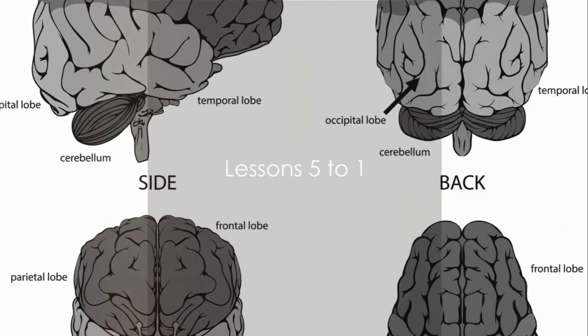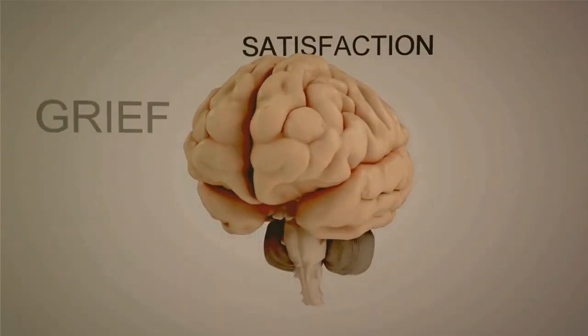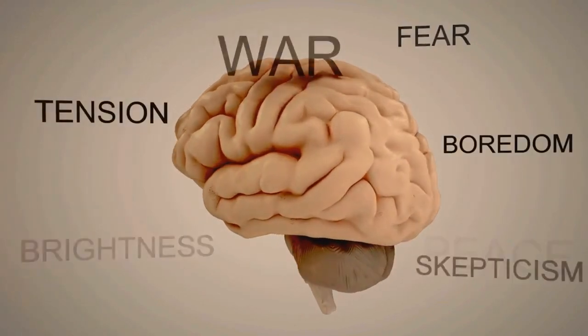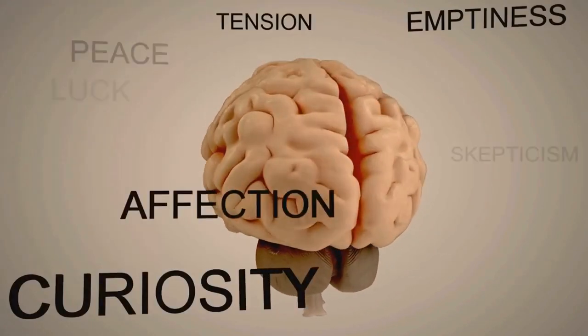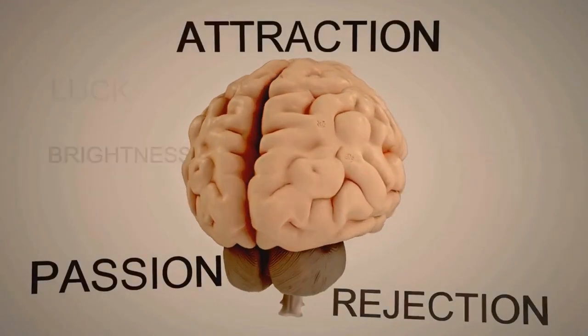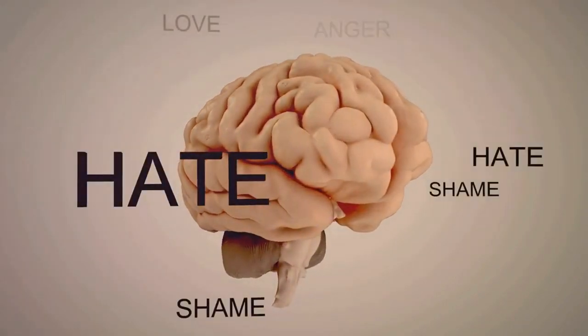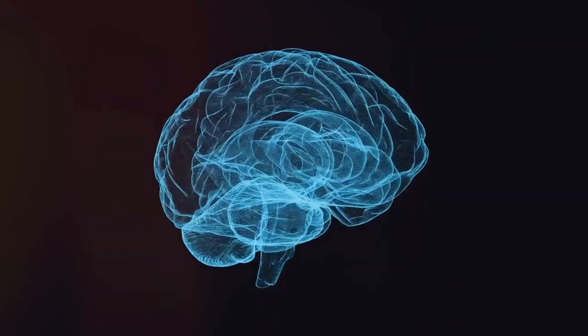Lesson 5. Emotions Influence Decisions. Our brains process emotions which play a vital role in our decision-making processes. Whether we're aware of it or not, emotions shape our choices, both trivial and significant. By understanding our emotional triggers, we can make more informed decisions. Moving on to Lesson 4.